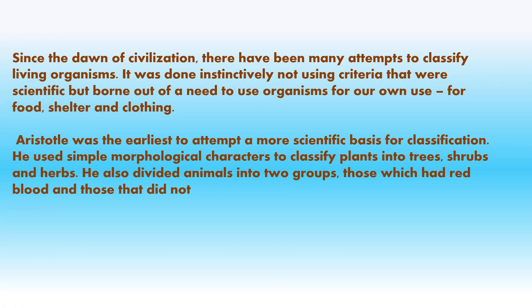Since the dawn of civilization, there have been many attempts to classify living organisms. It was done initially not using scientific criteria but born out of a need to use organisms for our own use — for food, shelter and clothing. Aristotle was the earliest to attempt a more scientific basis for classification. He used simple morphological characters to classify plants into trees, shrubs and herbs. He also divided animals into two groups: those which had red blood and those that did not.